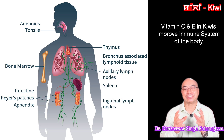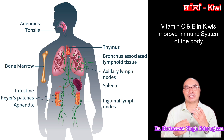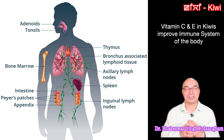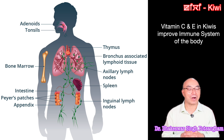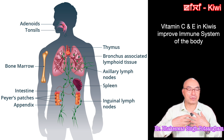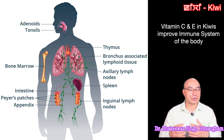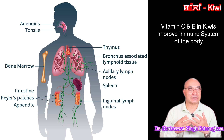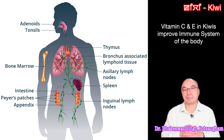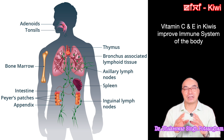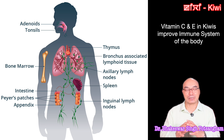If you have any irritations or infections, kiwi can help. There are many parts of the immune system such as the lymph nodes, the intestine, the spleen, the thymus, and other organs and tissues. The immune system requires vitamin C and vitamin E. Even if you have a chronic illness or cancer, supporting the immune system is important.